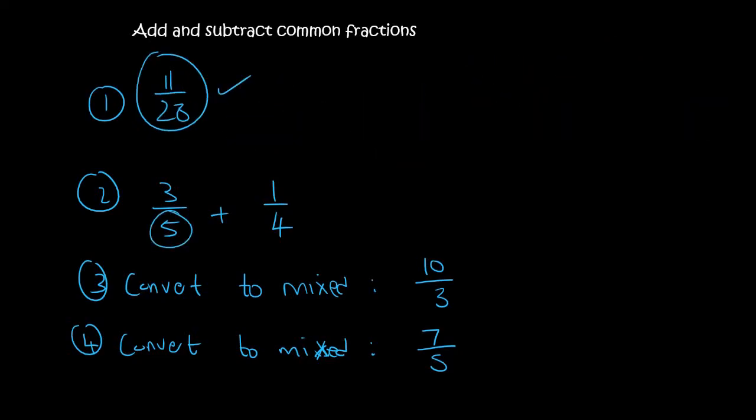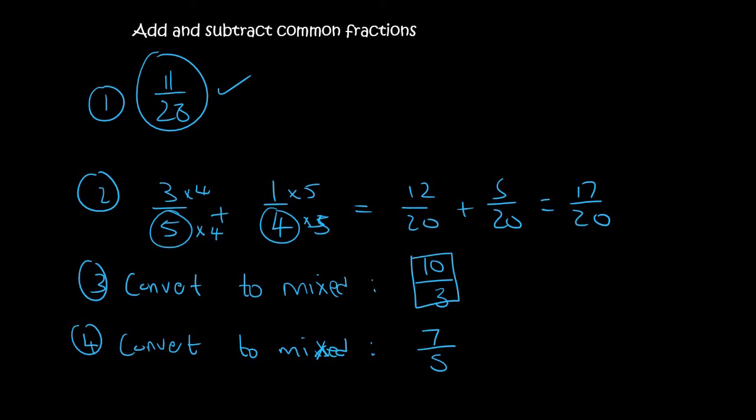Number 2, the common number between 5 and 4 is 20. So you times this one by 4, times this one by 4, times this one by 5, times this one by 5. And so that will give you 12 over 20 plus 5 over 20, which gives you 17 out of 20. Now we're going to convert these into mixed numbers. So 3 fits into 10 three times, then there's 1 left over, so we say 1 over 3. 5 fits into 7 once, and then there's 2 left over.